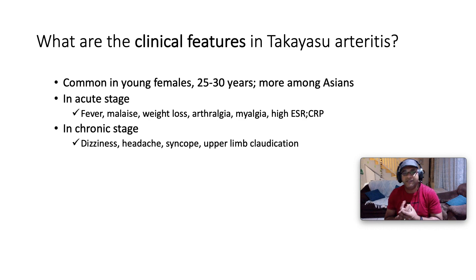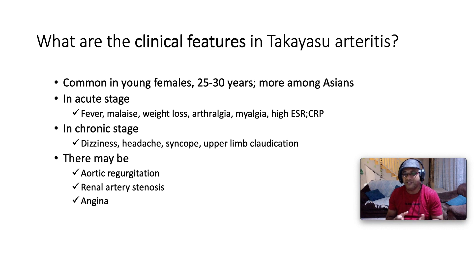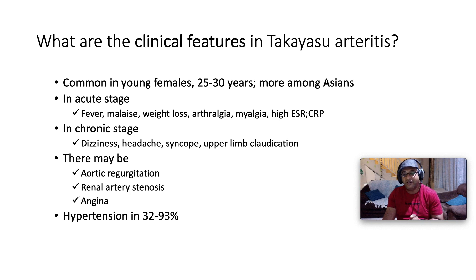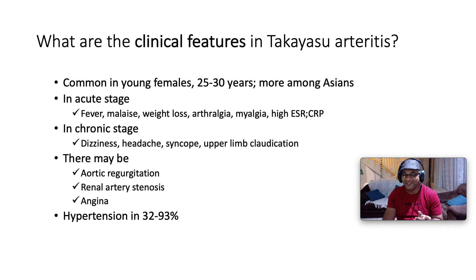In the chronic stage, patients complain of dizziness, headache, and syncope. They may have upper limb claudication, aortic regurgitation, renal artery stenosis, and angina. When palpating the pulses you note asymmetrical pulses — this is called pulseless disease. Hypertension can occur on a renovascular basis in 32 to 39 percent of cases.